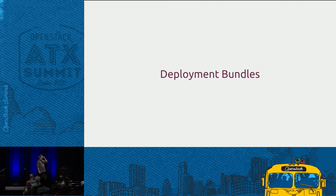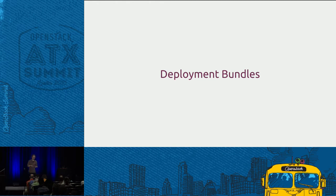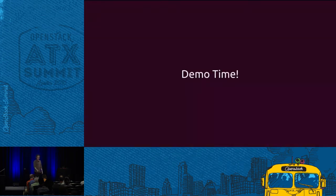We've got a particular bundle — a bundle is a group of charms, the configuration of them, and the relations between them. It's up on GitHub, and there's a URL at the end of the presentation if you want to go take a look, with some good documentation there as well. We have an OpenStack on LXD bundle which has got all the right config knobs tuned to allow you to do this.